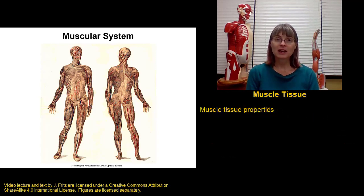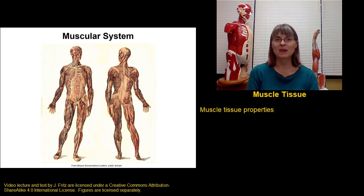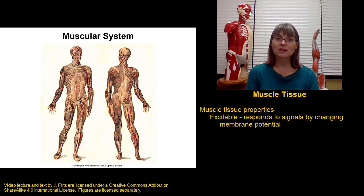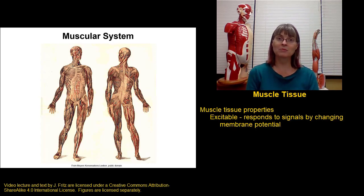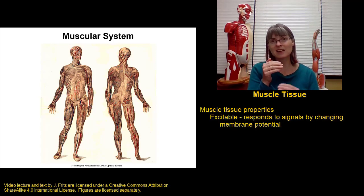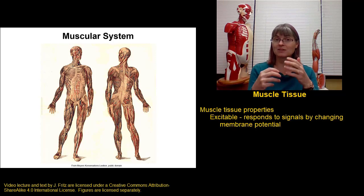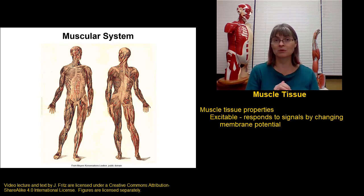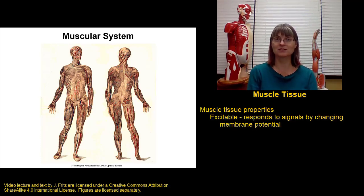Whether we're talking about cardiac muscle, smooth muscle, or skeletal muscle, all muscle tissues share four important properties. The first is that muscle tissue is excitable. To be excitable means that the cells will change their membrane potential in response to some sort of signal. The membrane potential is the difference between the charge inside the cell and the charge outside the cell based on different concentrations of ions. Excitable cells receive signals and change the charge of the cell in response to that signal, and that's what muscle cells do.